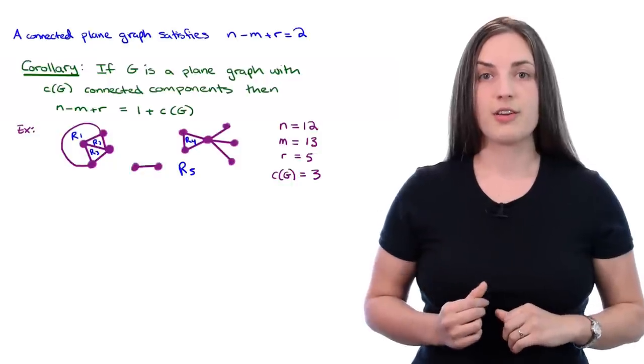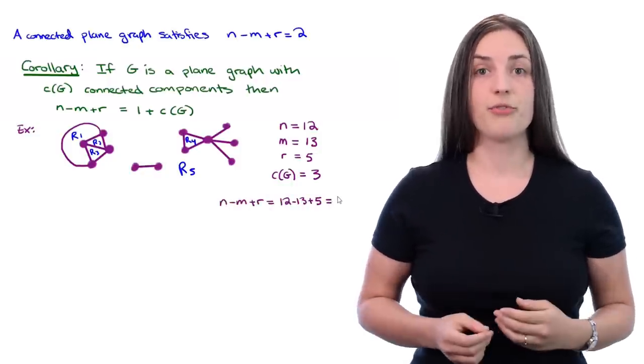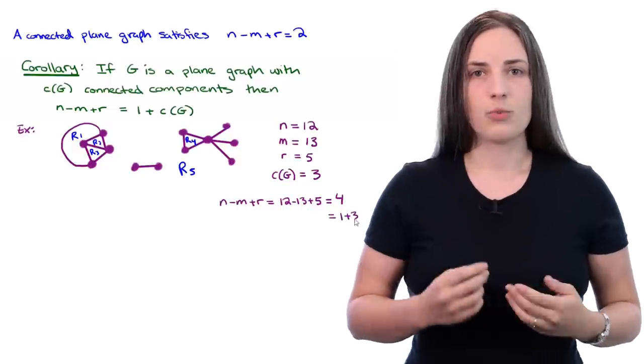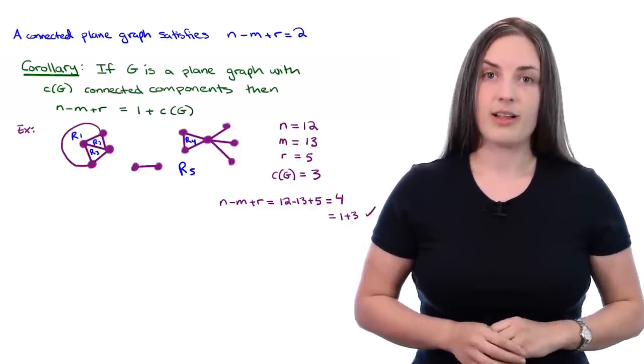So if you put this all together, you'll see that N minus M plus R is equal to four, which is clearly the same as one plus three. So the theorem does generalize to the disconnected case as well.